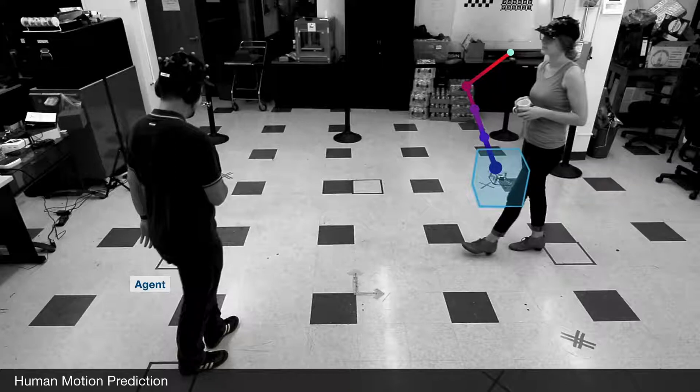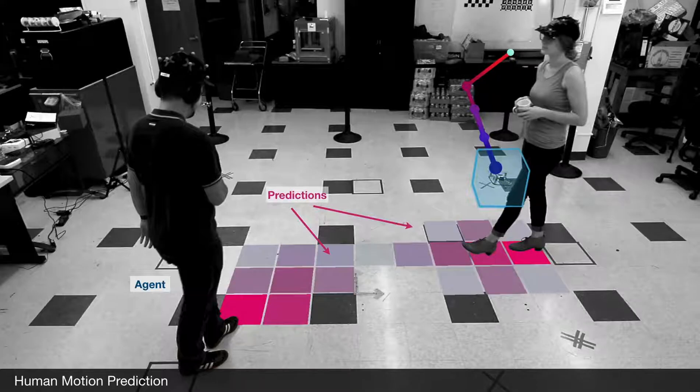Now we move past static environments and introduce other agents such as humans. Our robot will need to predict the future motion of these agents in order to prevent collisions.